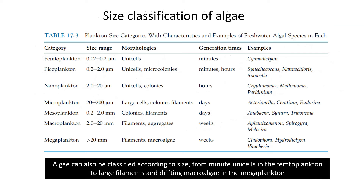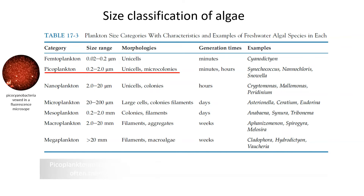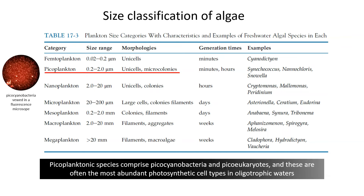Algae can also be classified according to size, from minute unicells in the femtoplankton to large filaments and drifting macroalgae in the megaplankton. The picoplanktonic species comprise picocyanobacteria and picoeukaryotes, and these are often the most abundant photosynthetic cell types in oligotrophic waters.